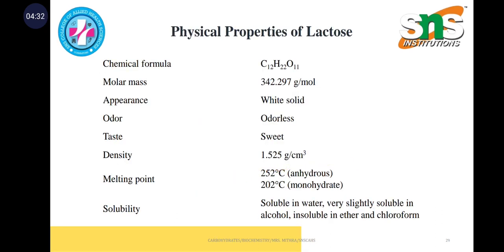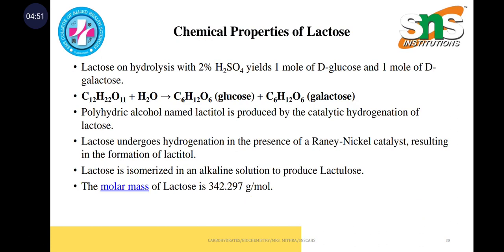Physical properties: it is odorless, density is 1.525, and melting point is 252 degrees Celsius. It is soluble in water, very slightly soluble in alcohol, and insoluble in ether and chloroform. Chemical properties: C12H22O11 plus H2O gives glucose and galactose, that is C6H12O6. It undergoes hydrogenation and is isomerized in alkaline solution to produce lactulose.